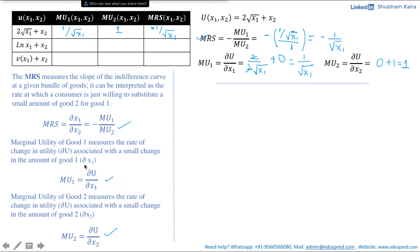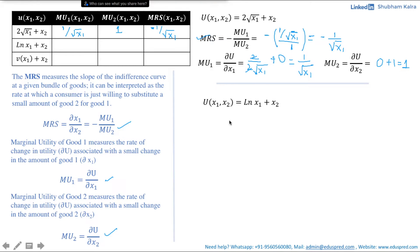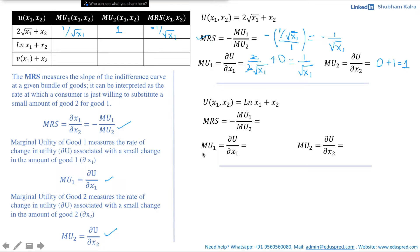This is basic maths — you just need to keep in mind the formulas for MRS and marginal utilities, differentiate the utility function to get the marginal utilities, then use those values to get the MRS. Now let's move on to the next part: u(x1, x2) = ln(x1) + x2, where ln represents the natural logarithm. We follow the same procedure — MRS = −MU1/MU2.